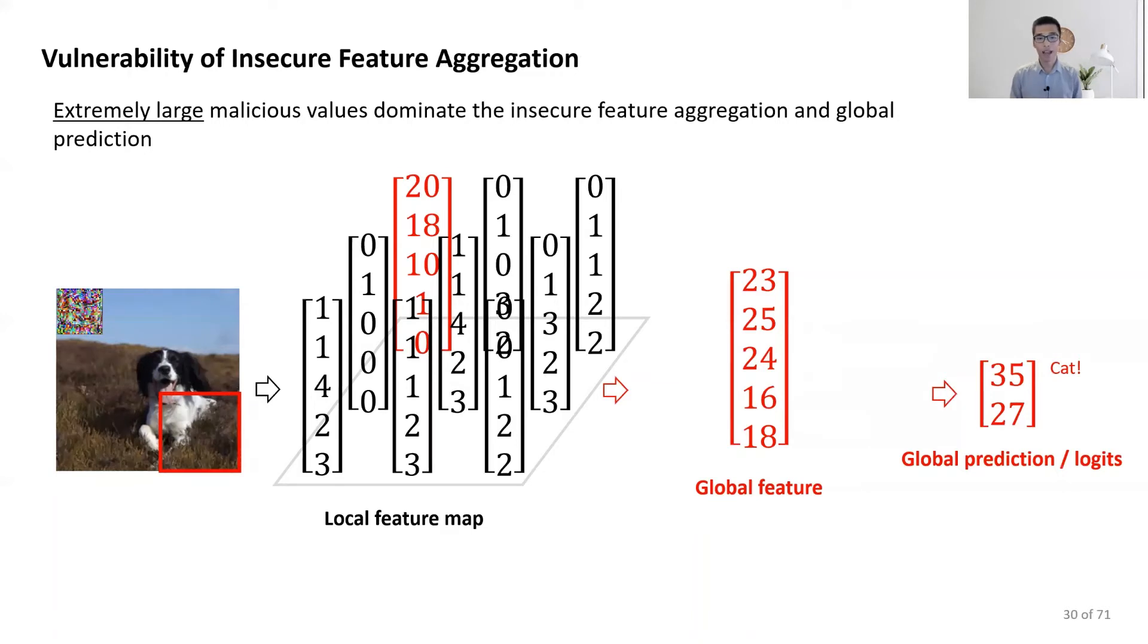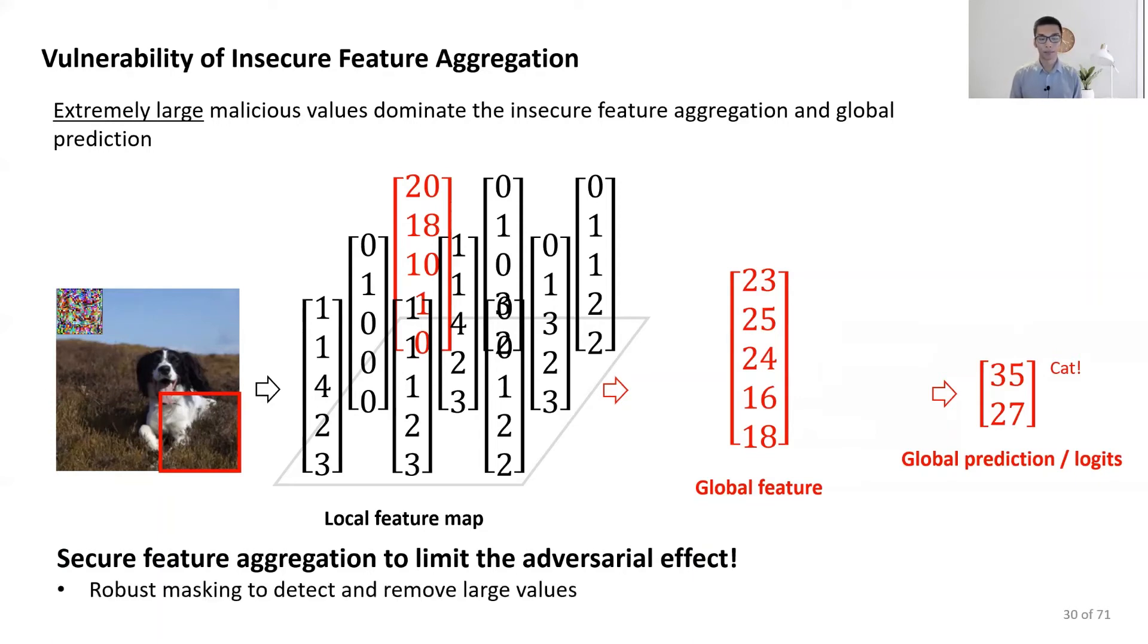Then, how can we limit this adversarial effect? We propose to do secure feature aggregation and we propose an instance, robust masking, to detect and remove those large values.